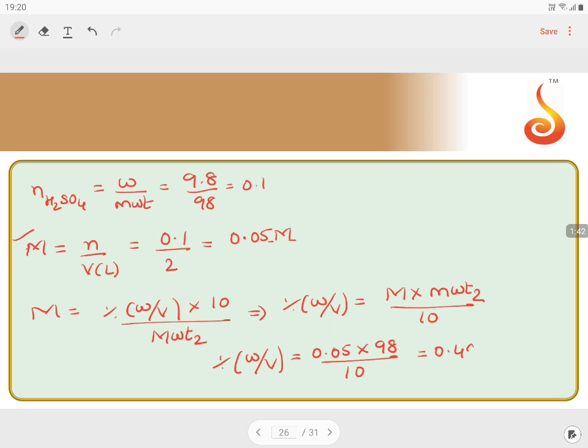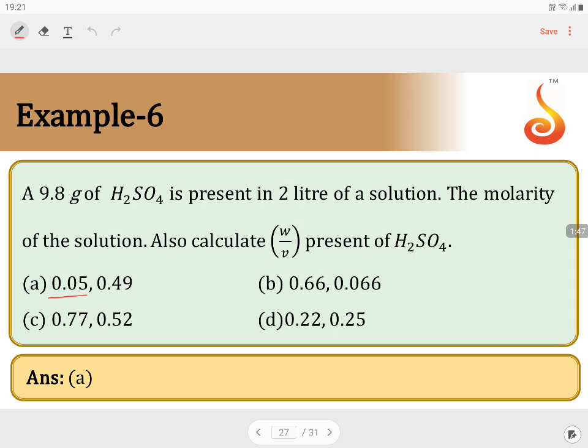This is 0.49%. We have this option: 0.05 and 0.49, option A. So the answer for the question will be option A.